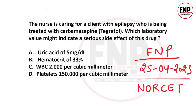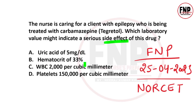Our first question: The nurse is caring for a client with epilepsy being treated with carbamazepine — which laboratory value might indicate a serious side effect of this drug? Options: uric acid 5 mg/dL, hematocrit 33%, WBC 2000 per cubic millimeter, platelets 150,000 per cubic millimeter.